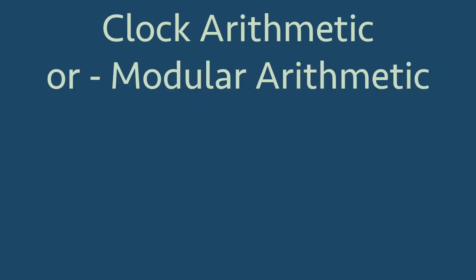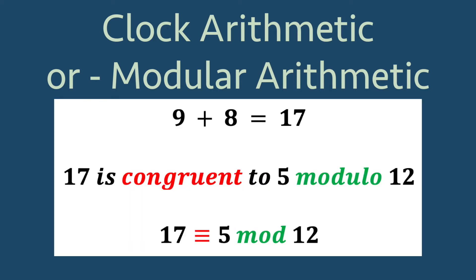These sort of calculations are called clock arithmetic, which is referred to as modular arithmetic in mathematics. In our example, we would say that 17 is congruent to 5 modulo 12, which means that 5 and 17 are in the same equivalence class.